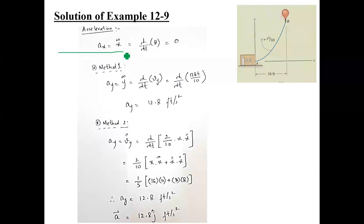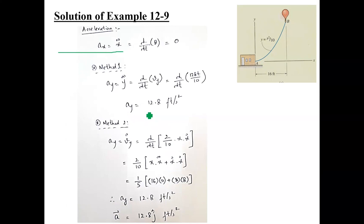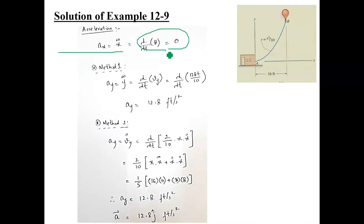For x-double-dot: x-dot was the first derivative of 8t, which is the constant 8. When x-dot is a constant, x-double-dot — the derivative of a constant — is zero. Therefore, ax = 0, since the original x function was simply 8t. Differentiating twice gives zero.